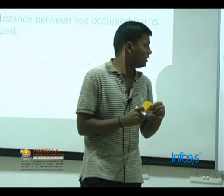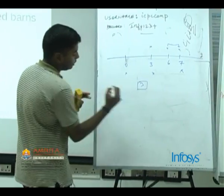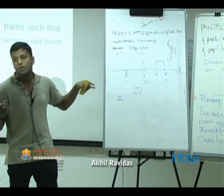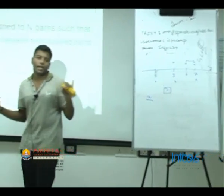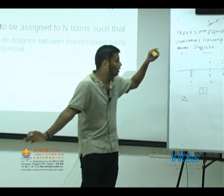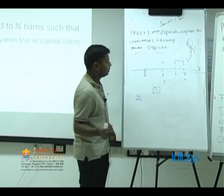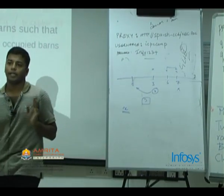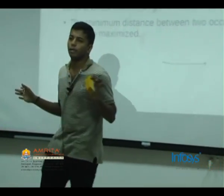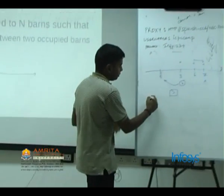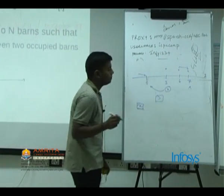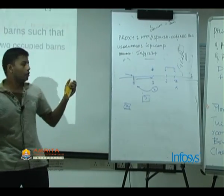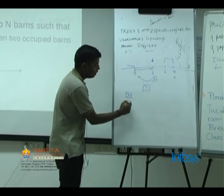Let X be the given minimum distance, and check if you can allocate C cows with X as the minimum distance. Without loss of generality, the first barn is always occupied — if there's a solution where the first barn is not occupied, you can move that cow to the first barn without reducing the minimum distance. So given X, allocate one cow to the first barn, then go forward and allocate a cow each time the distance exceeds X.